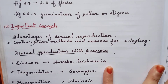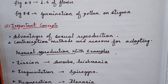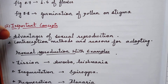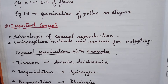Moving on to important concepts — the important questions which have been repeated so far. The first one is advantages of sexual reproduction, a very very important question. It might be a three-mark or four-mark question, and they might also incorporate it with other questions and have it appear as a five-mark question as well.